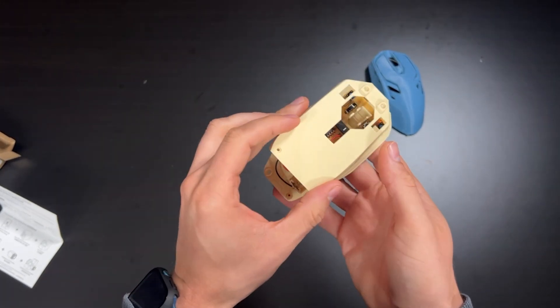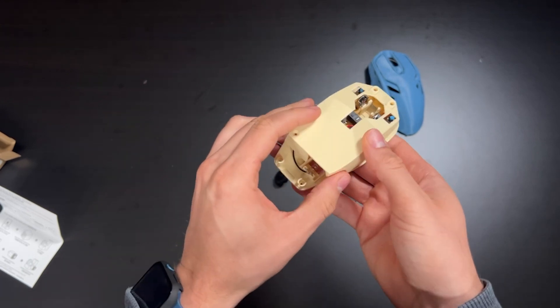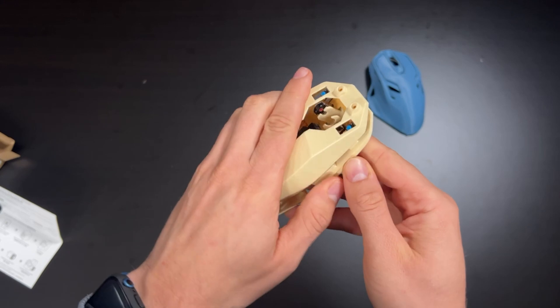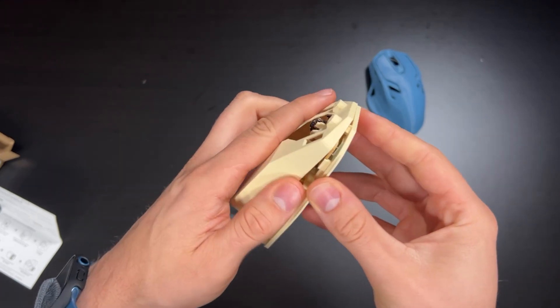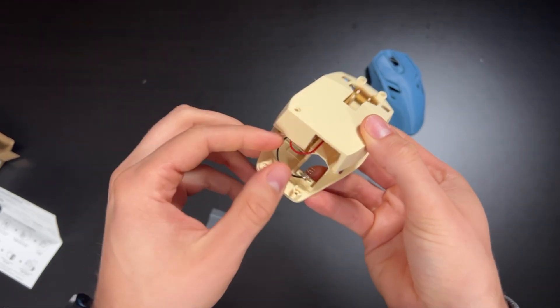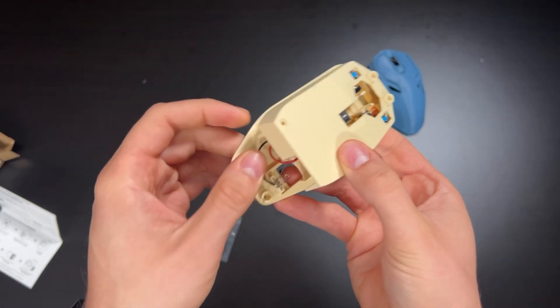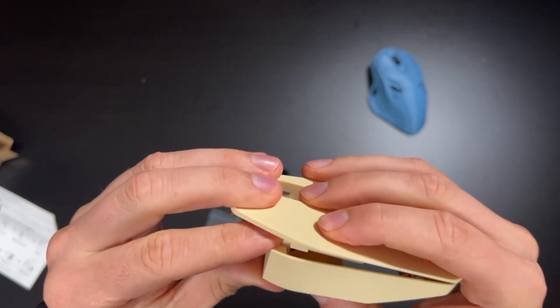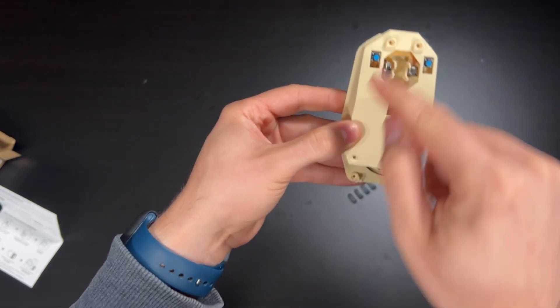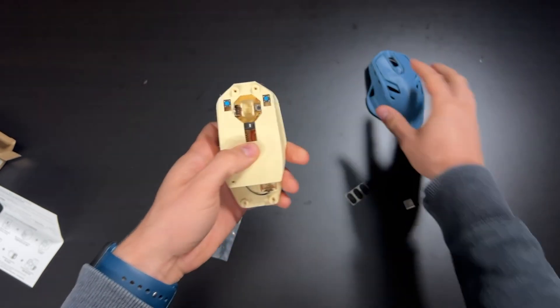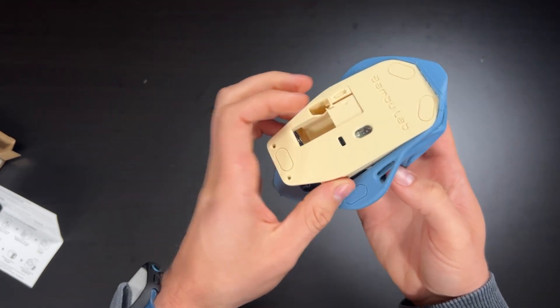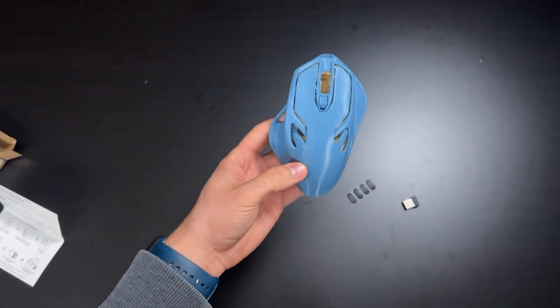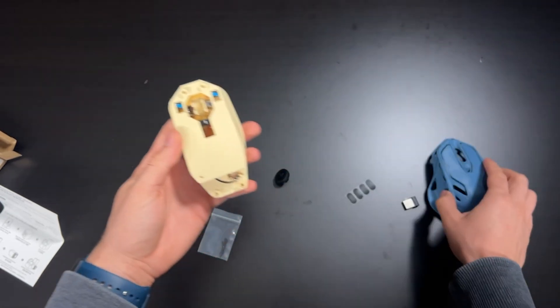I believe this gets screwed in. There we go. Now you would screw in these screws here. I believe this goes in and two more screws go here. Oh, I forgot to put in the roller mouse wheel too.